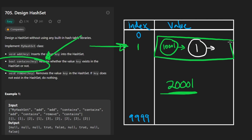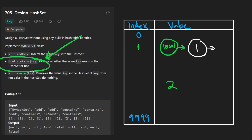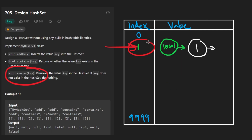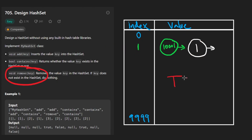If we ask whether 20,001 exists, it maps to the same index as 1, but searching the linked list we'd find it does not exist. For removing keys, we go to the index the key maps to, find the linked list node if it exists, then remove it by taking the previous pointer and updating it to point at the next pointer — effectively deleting that node.